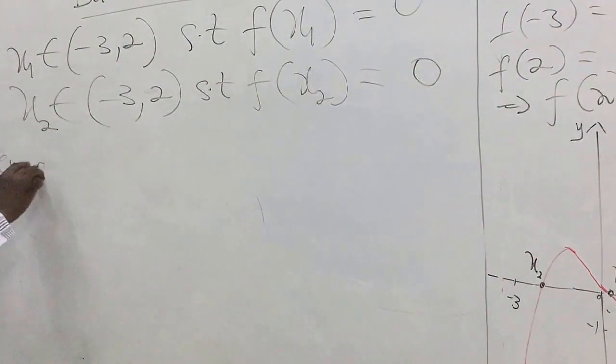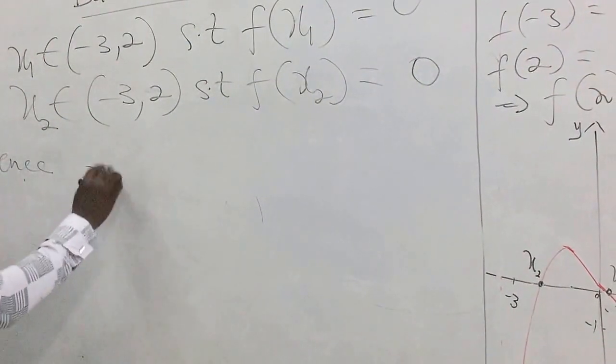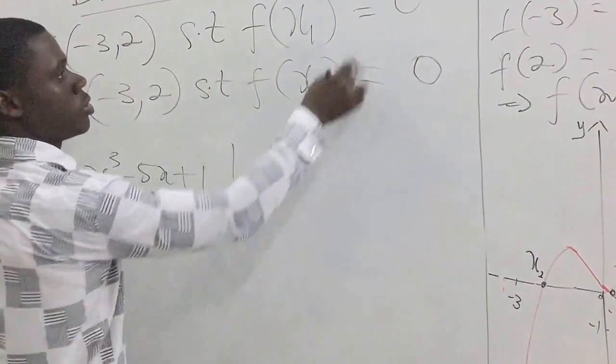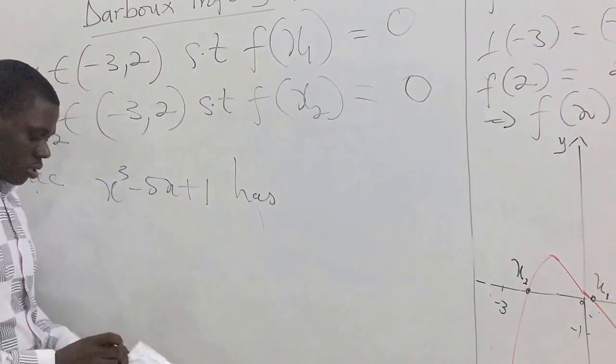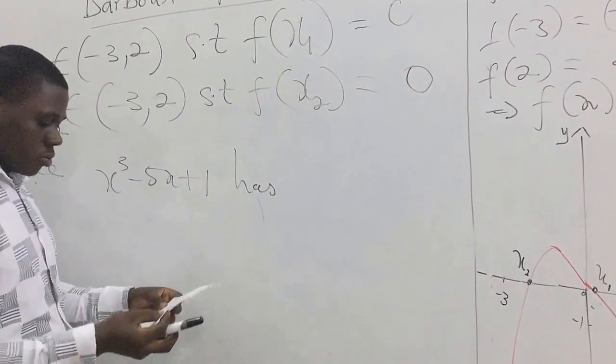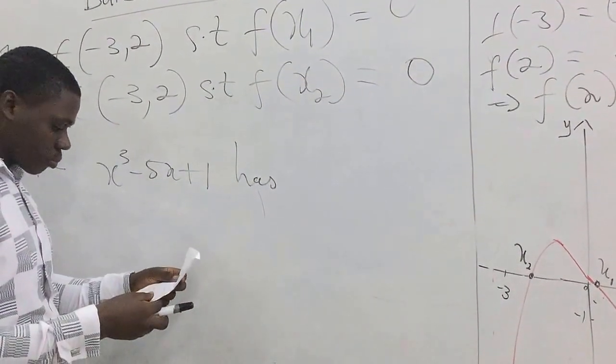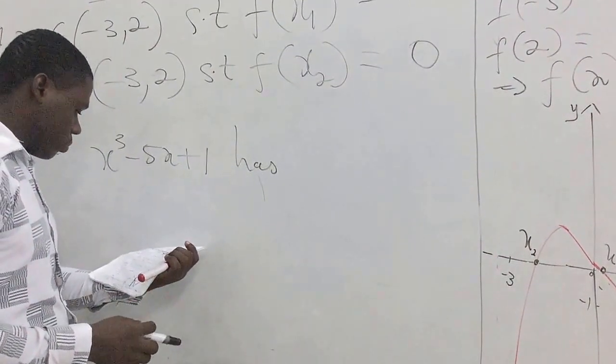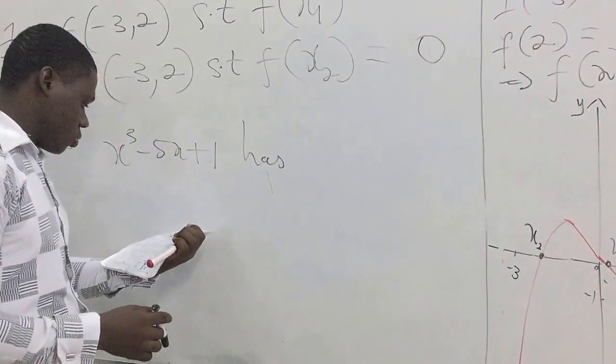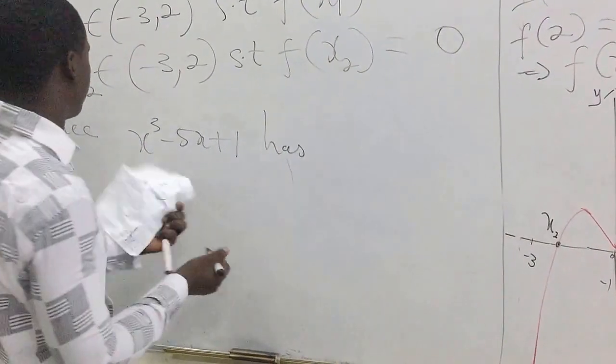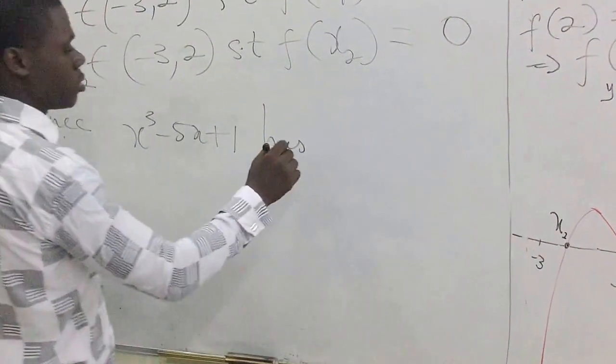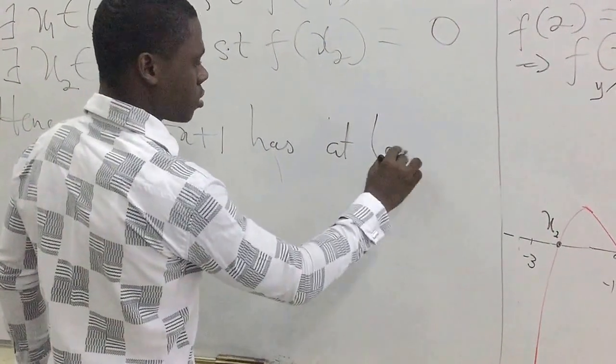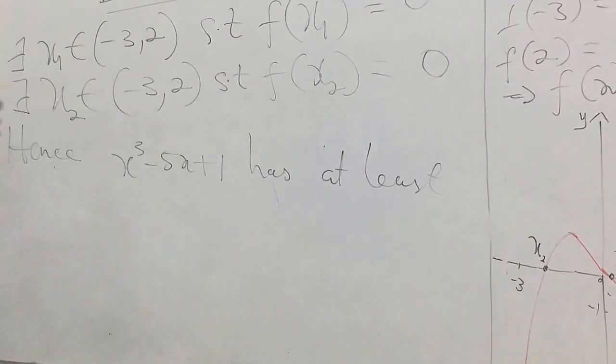So we conclude that hence x³ - 5x + 1 has... You see that we have the question, what will it have to do? It has got to show that it is going to have at least two solutions within the interval. So it has at least two, meaning two or more solutions.